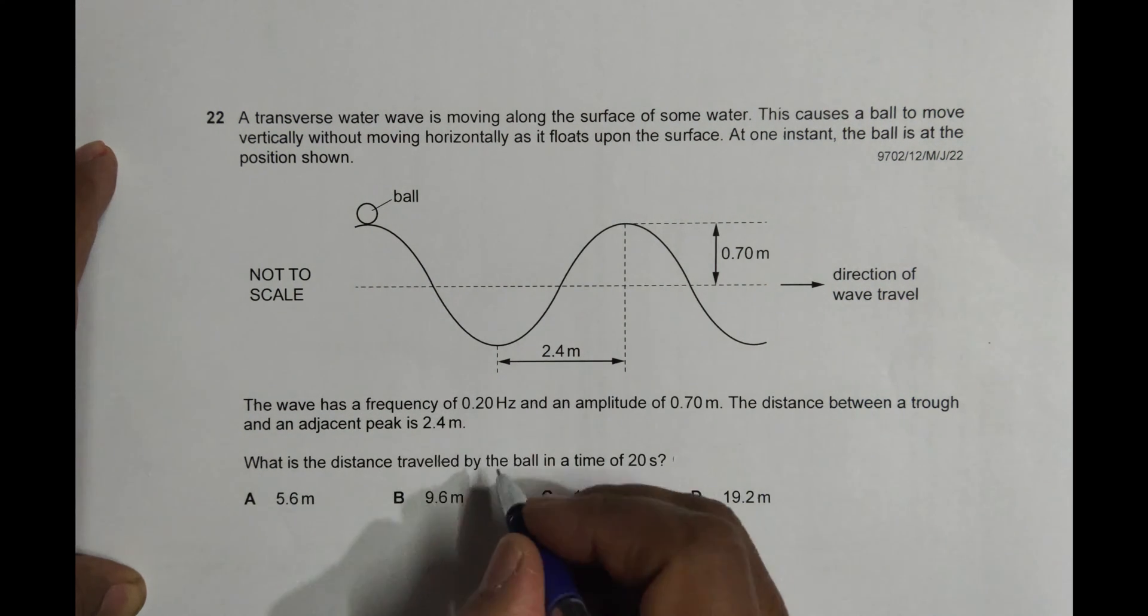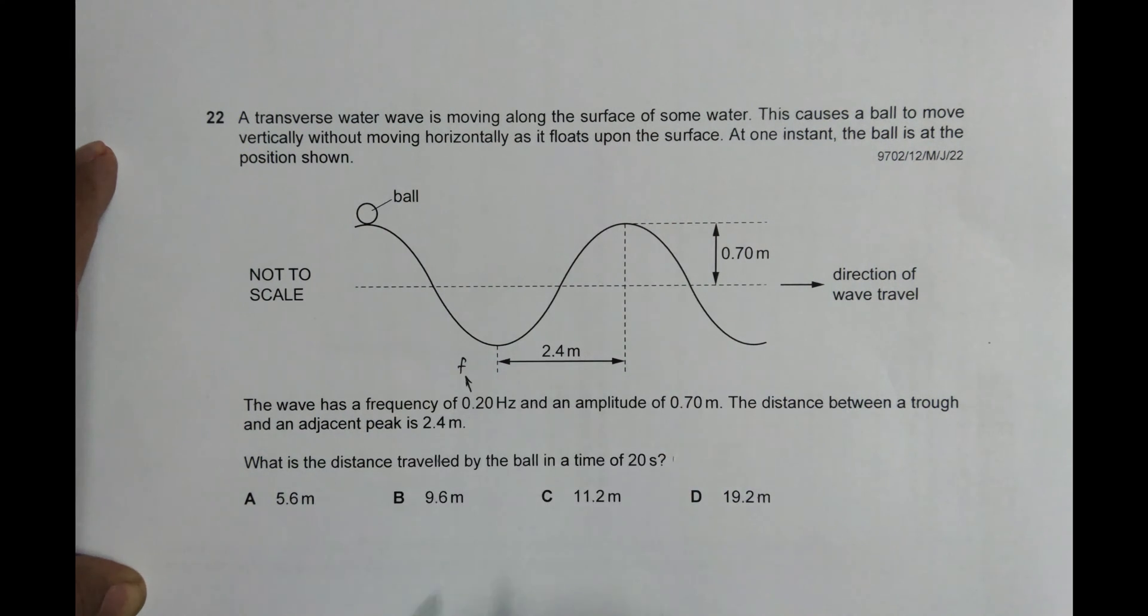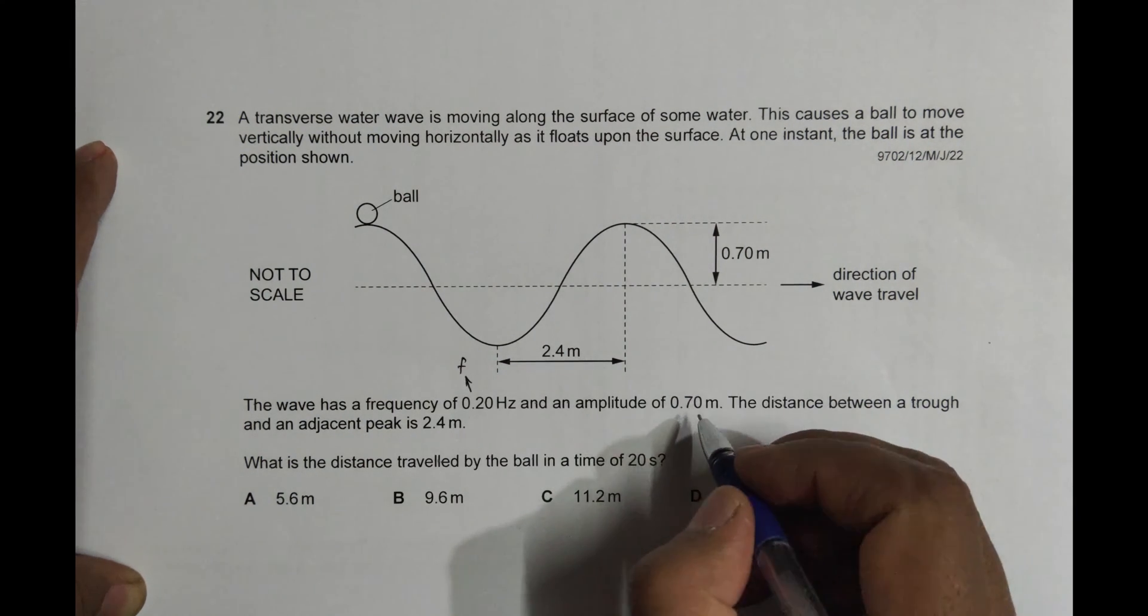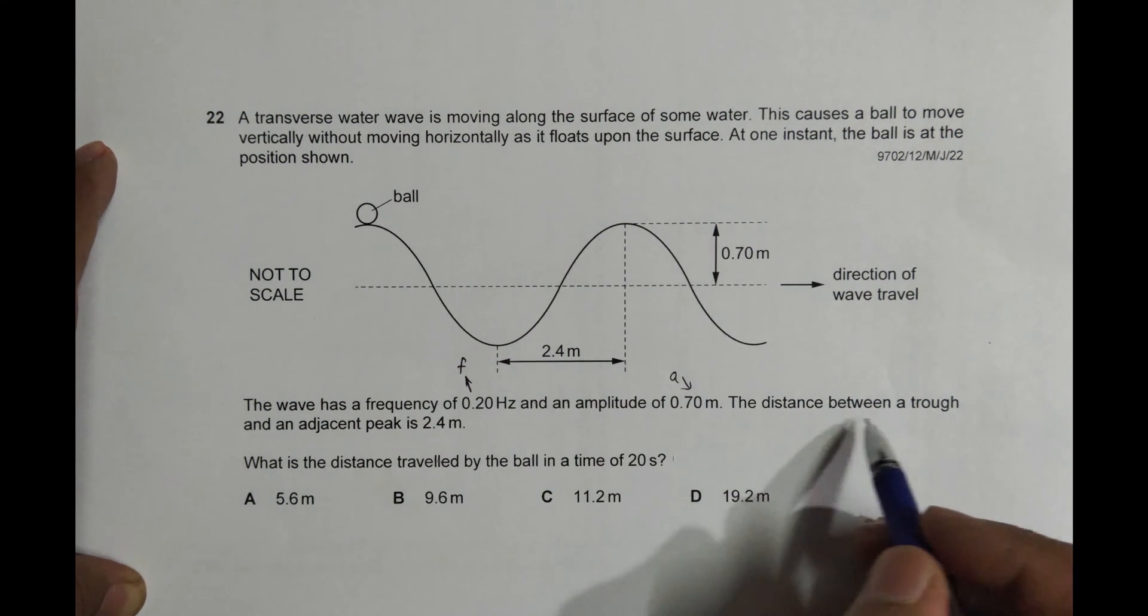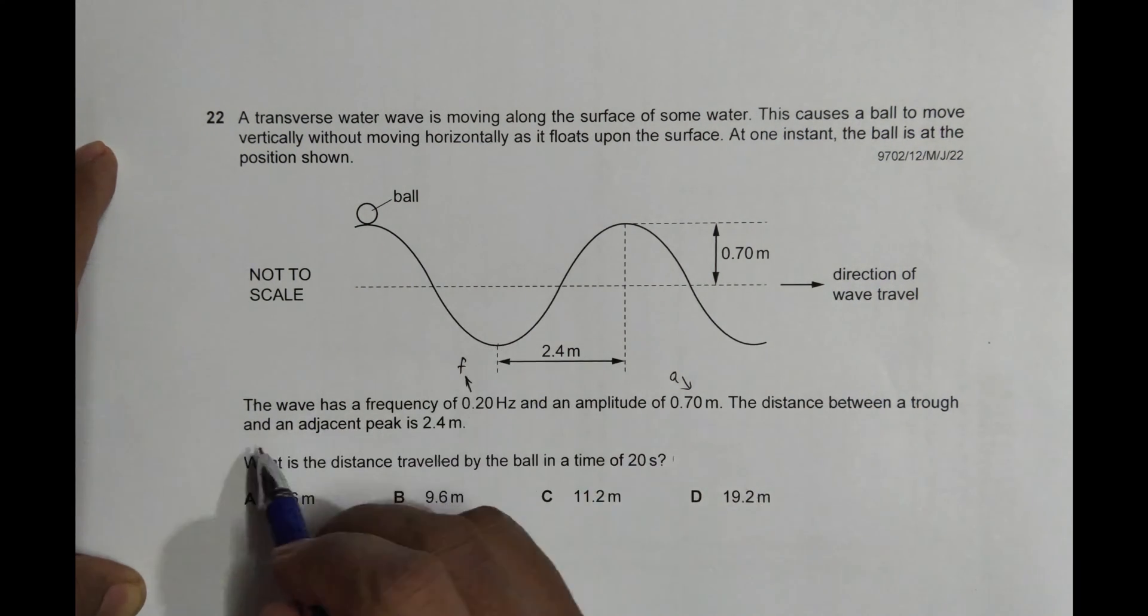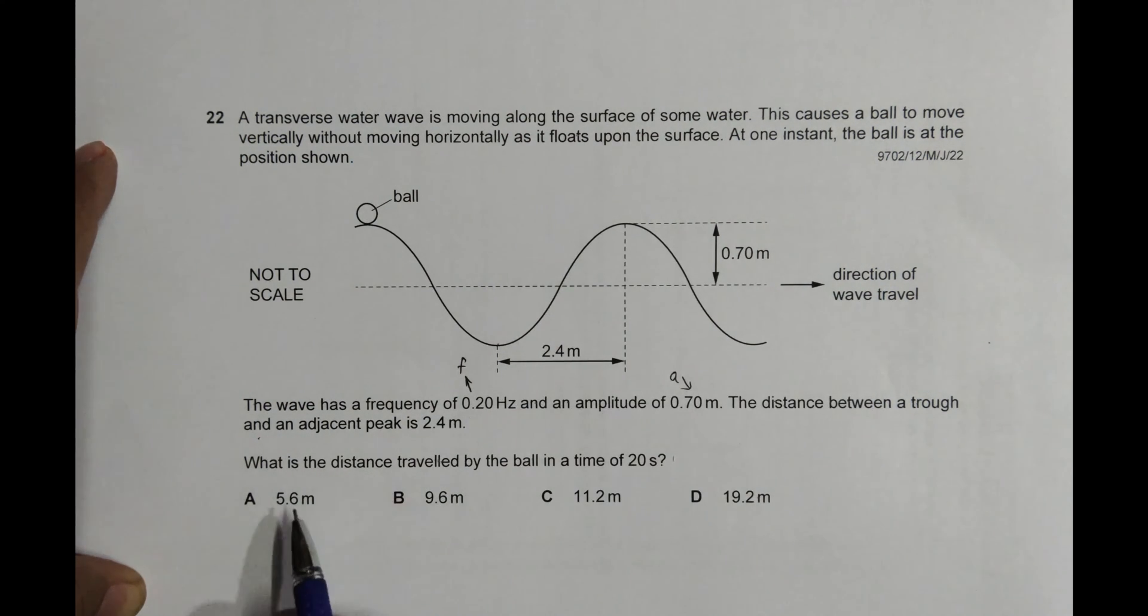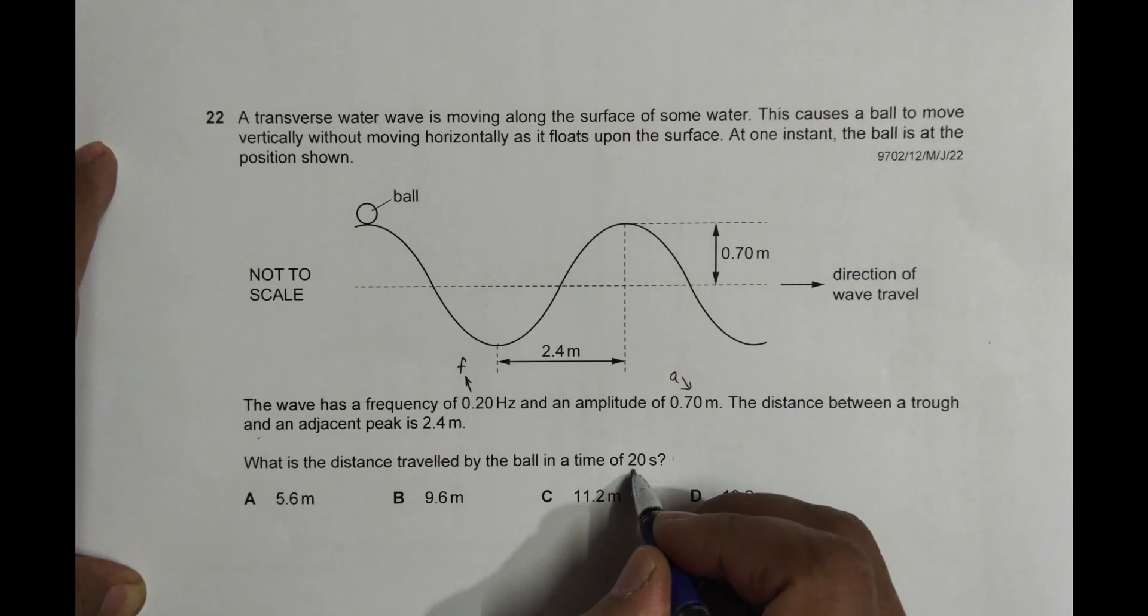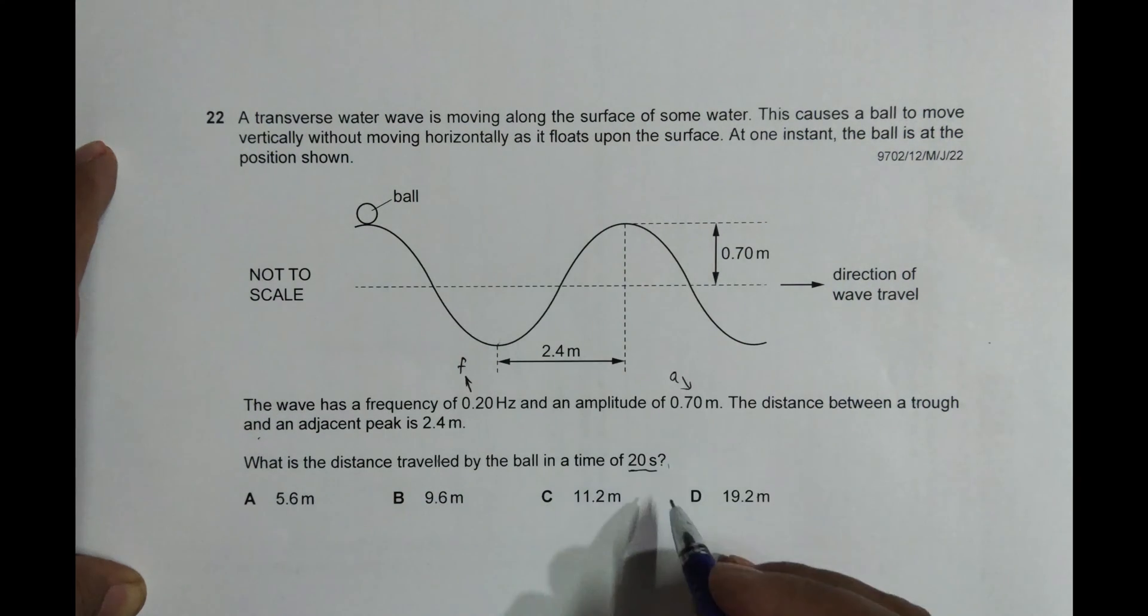The wave has a frequency of 0.20 Hz, which is our f, and an amplitude of 0.70 meters, so A equals 0.70 meters. The distance between a trough and an adjacent peak is 2.4 meters. What is the distance traveled by the ball in a time of 20 seconds? So we have to find the distance the ball travels in 20 seconds.